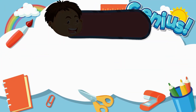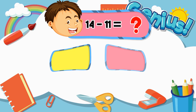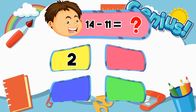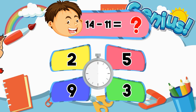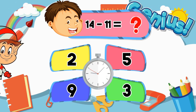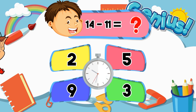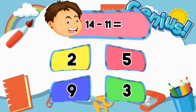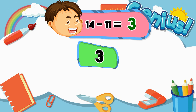What is 14 minus 11? Options: 2, 5, 9, 3. Answer: 3.